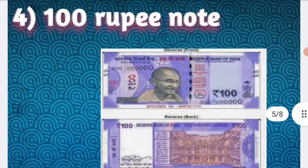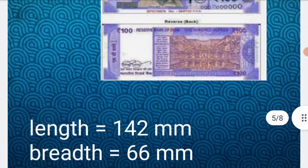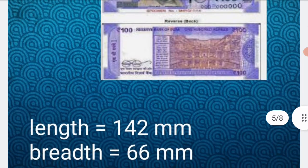Fourth: 100 rupee note. Length is 142 mm, breadth is 66 mm.